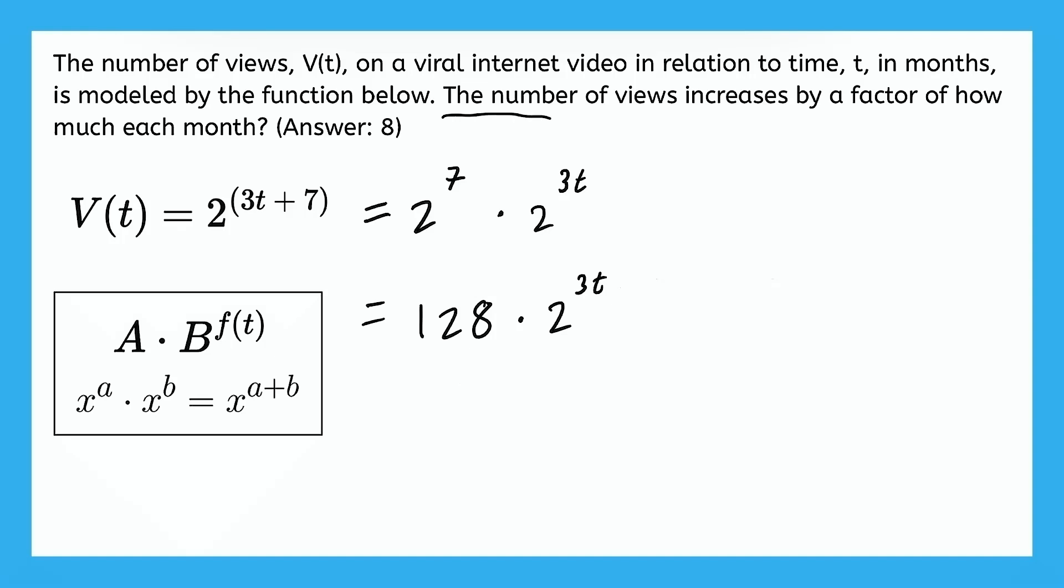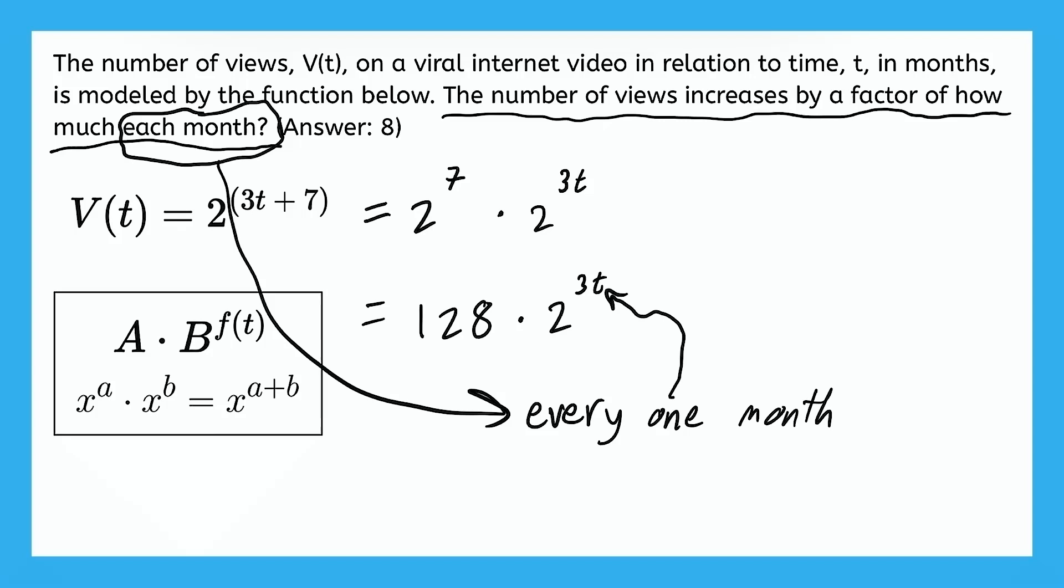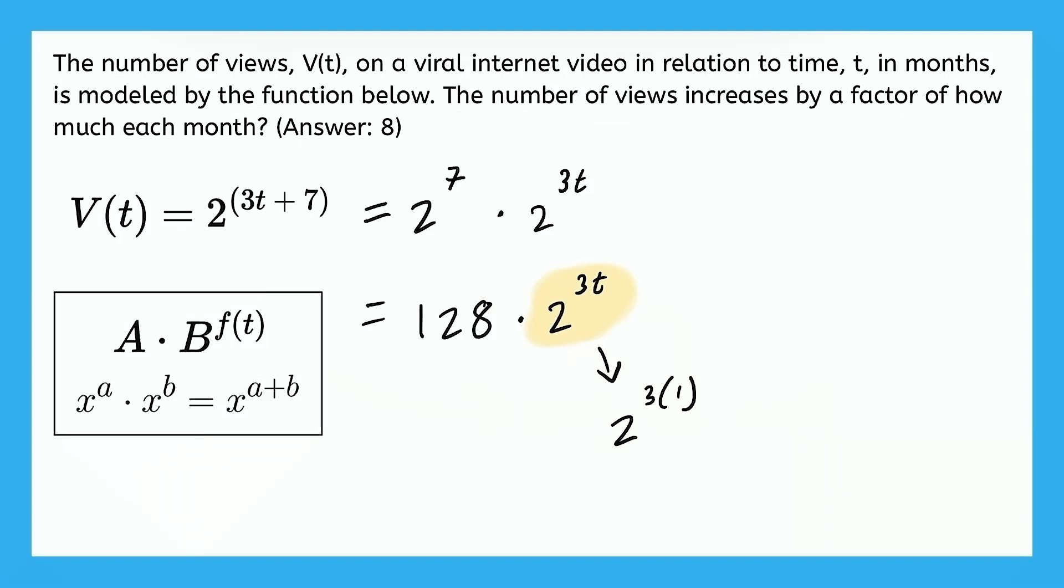Well, they said the number of views increases by a factor of how much each month. What does each month mean? That means every one month. So if t is in months, they're saying what happens if we plug in 1 for t right there. So let's plug in 1 for t and see what happens. So the part of our expression that involves that variable t is now 2 to the power of 3 times 1, or we can just say 2 to the power of 3, or 8.